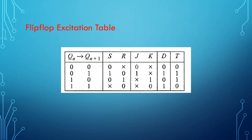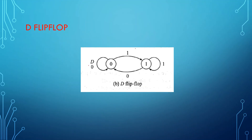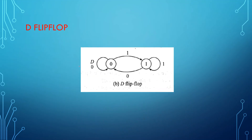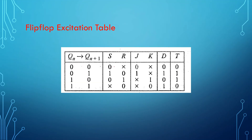In the excitation table, we have the present state and the next state. Present state 0, next state 0; present state 0, next state 1; present state 1, next state 0; and present state 1, next state 1. For the SR flip-flop: if present state is 0 and next state must be 0, you can give input 0,1 or 0,0 — so 0x. If present state is 0 and next state must be 1, you set it by giving 1,0. If present state is 1 and next state must be 0, you reset it with 0,1. If present state is 1 and next state must remain 1, give 0,0 or 1,0 — that is x0.